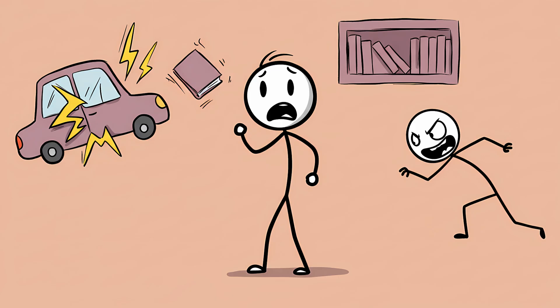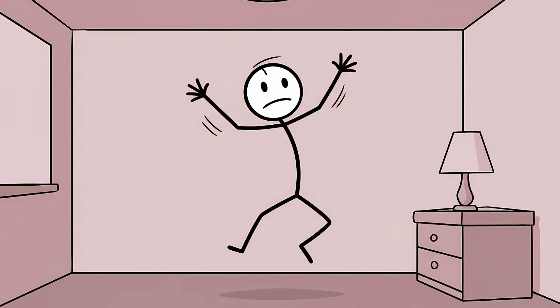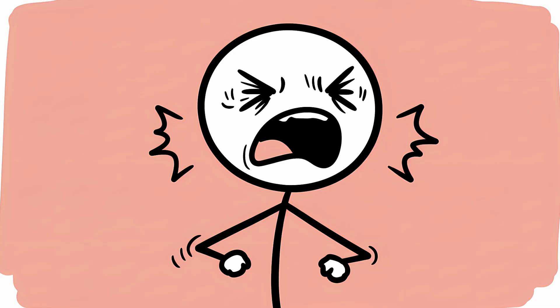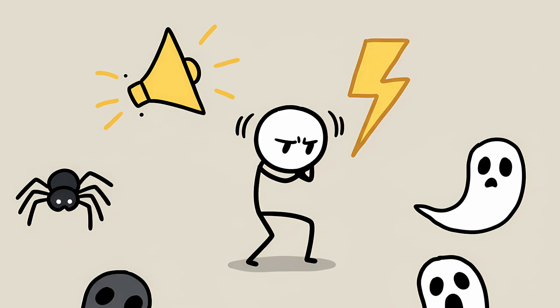The Human Airbag. A car horn blares right next to you. A book falls off a shelf with a loud thud. Your roommate sneaks up behind you and yells your name. Before your conscious mind even has time to process what happened, your body has already reacted. Your shoulders fly up to your ears. Your eyes slam shut. You might even let out a small, undignified shriek. This is the startle reflex. And it's your nervous system's lightning-fast defense mechanism against, well, everything.